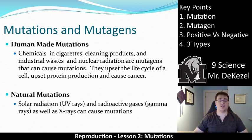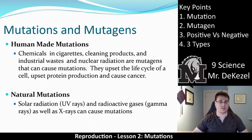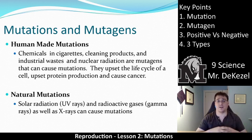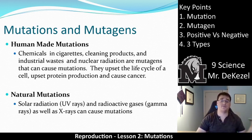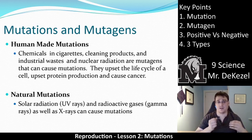There can be human-made mutagens: cigarettes, cleaning products, industrial waste, and nuclear radiation. They can upset the life cycle of a cell, make protein production incorrect, and can cause cancer. Some natural mutagens would be solar radiation, radioactive gases that occur all around us, and x-rays from the sun and from outer space. There are lots of different natural things that can cause mutations.